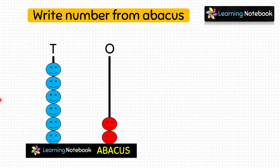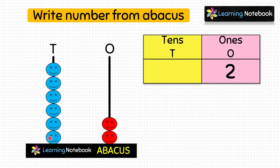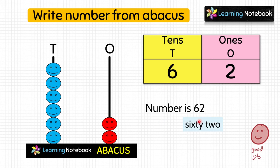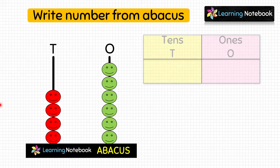Now let's find the number being shown by this next abacus. First we will count the beads at the ones place — these red beads: 1, 2. So write 2 at the ones place. Now count the beads at the tens place — these blue beads: 1, 2, 3, 4, 5, 6. So write 6 at the tens place. This abacus is showing the number 62.